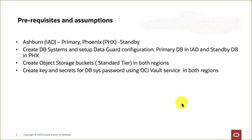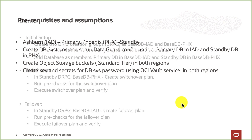Here are the prerequisites and assumptions. We have two OCI regions — Ashburn is our primary, Phoenix is our standby. We already created two DB systems and configured Data Guard. The primary database runs in Ashburn, the standby in Phoenix. We need two object storage buckets, one in each region, to store logs. You also need to create a DB SYS password as a secret using the OCI Vault service, created in both regions.